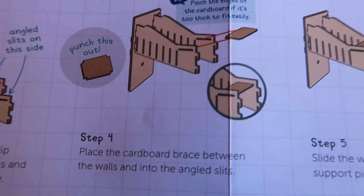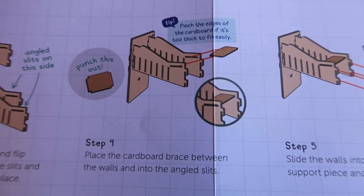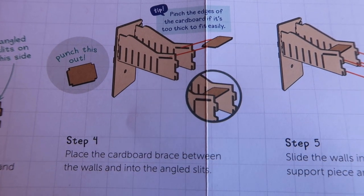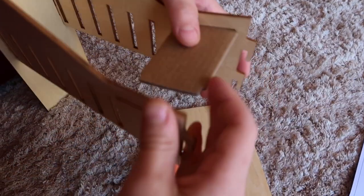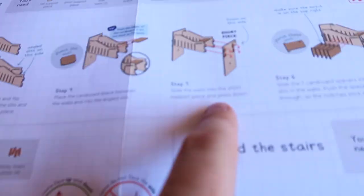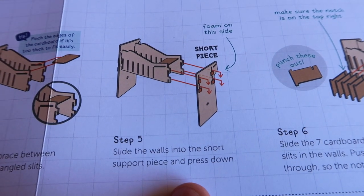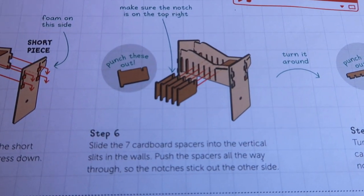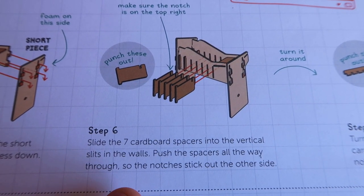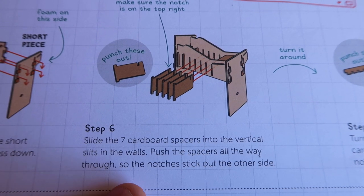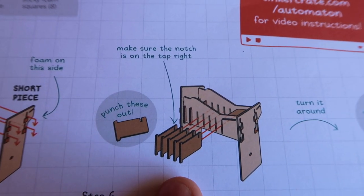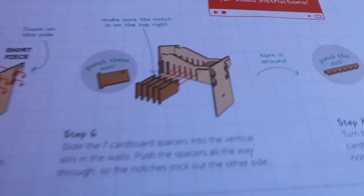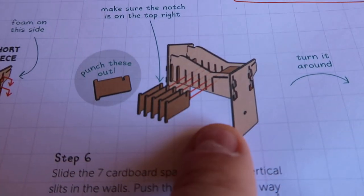Now wait before you do the next one, it says place the cardboard brace. That's this piece right here between the walls and into the angled slits. Now slide the walls into the short support and press down. Now step six, slide the seven cardboard spacers into the vertical slits in the walls. Push the spacers all the way through so the notches stick out the other side. Make sure the notch is on the top right.